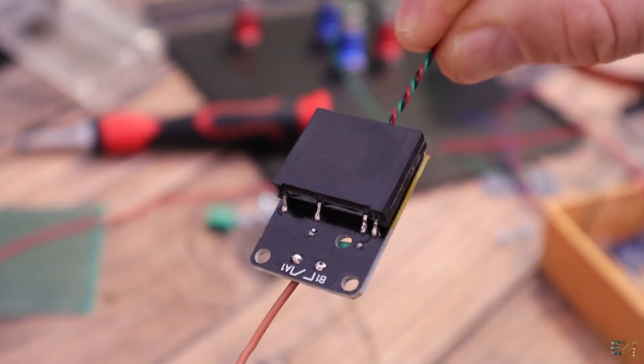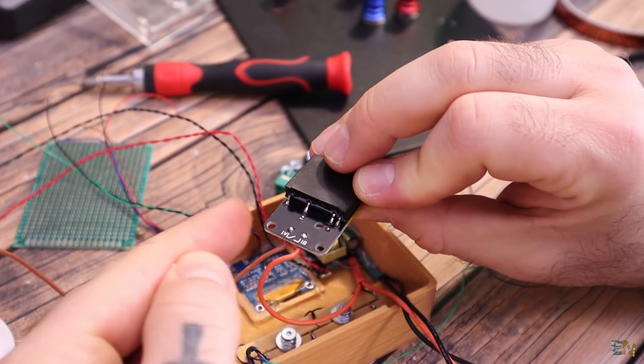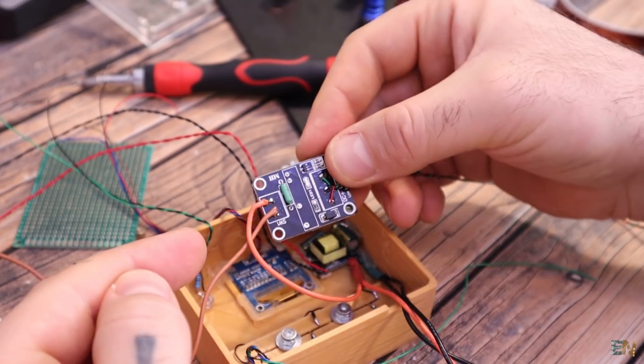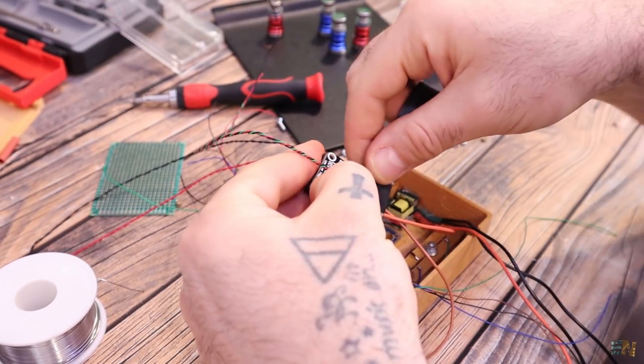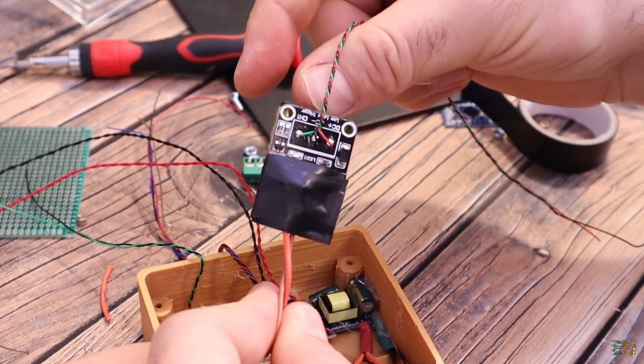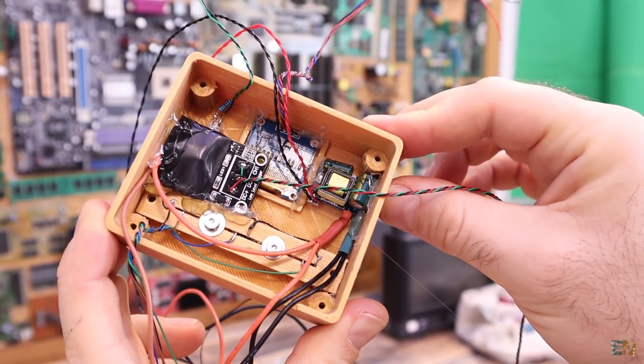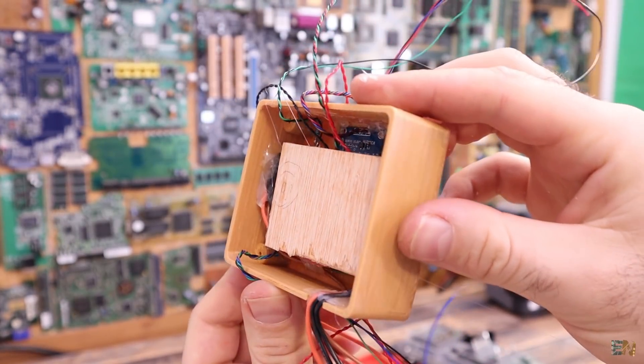Now I can glue this module inside of the case. Next we solder wires to the relay module. I connect the relay with the wires from the main input of 220V. Then we have to insulate this high voltage part and for that I will just use some electrical tape. Next I glue this inside as well.